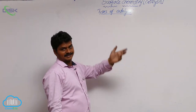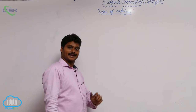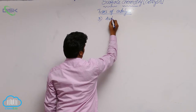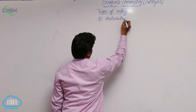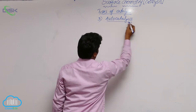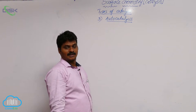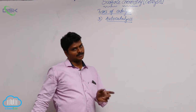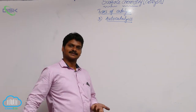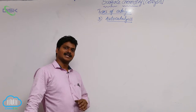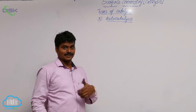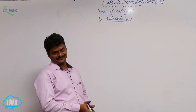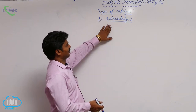In types of catalysis, we have already discussed homogeneous catalysis and heterogeneous catalysis. Homogeneous catalysis is when the catalyst and the reactants are in the same phase. Heterogeneous catalysis means the catalyst and the reactants are not in the same phase. Their mechanisms I had explained earlier. In this class, let's see about autocatalysis.